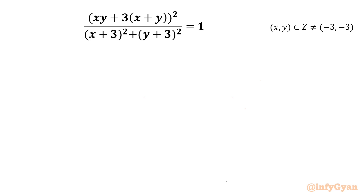Welcome back to Infigyan, my dear friends. In this video, we are going to take up another challenging question from Diophantine equations. It is: xy plus 3 times (x plus y) whole square, over (x plus 3) whole square plus (y plus 3) whole square, equal to 1. x and y belong to integers, and x and y simultaneously cannot be minus 3 and minus 3.